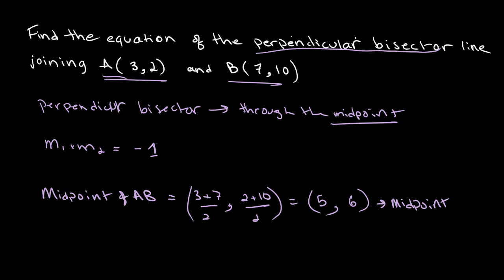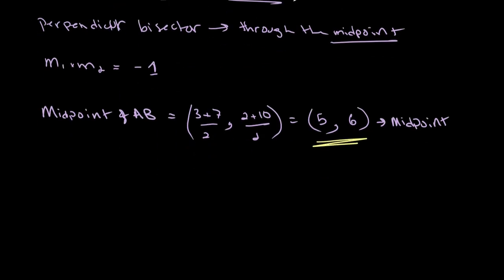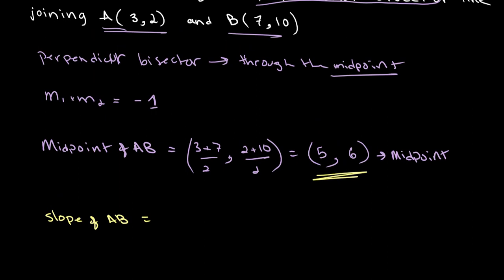Now we know this is one point through which our perpendicular bisector runs. In order to find the gradient of our perpendicular bisector, we need to find the slope of line AB. The slope of AB equals y2 minus y1, 10 minus 2, divided by x2 minus x1, 7 minus 3. From this we get 8 over 4, which equals 2.